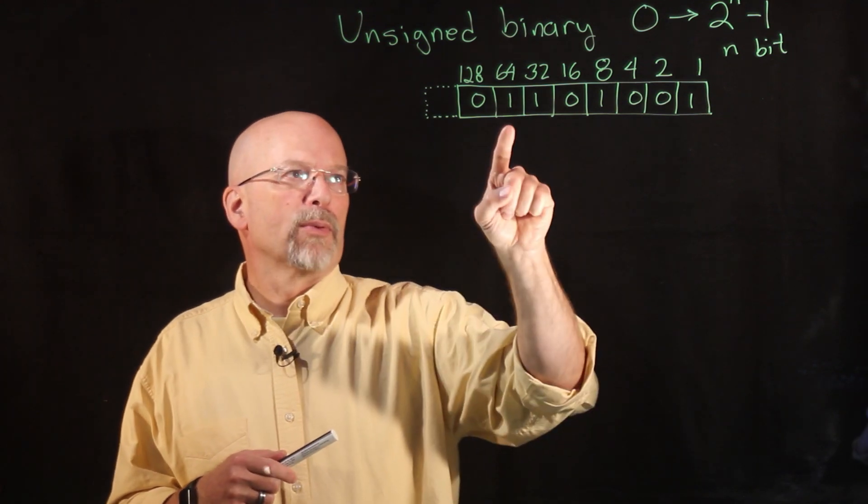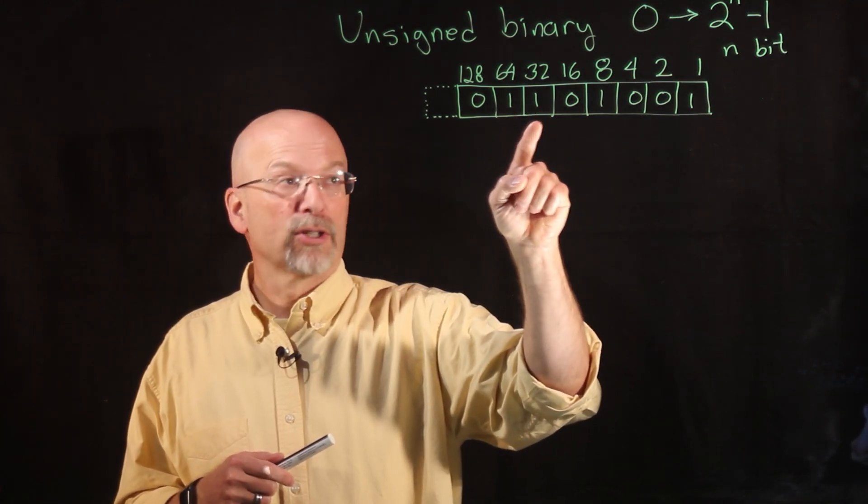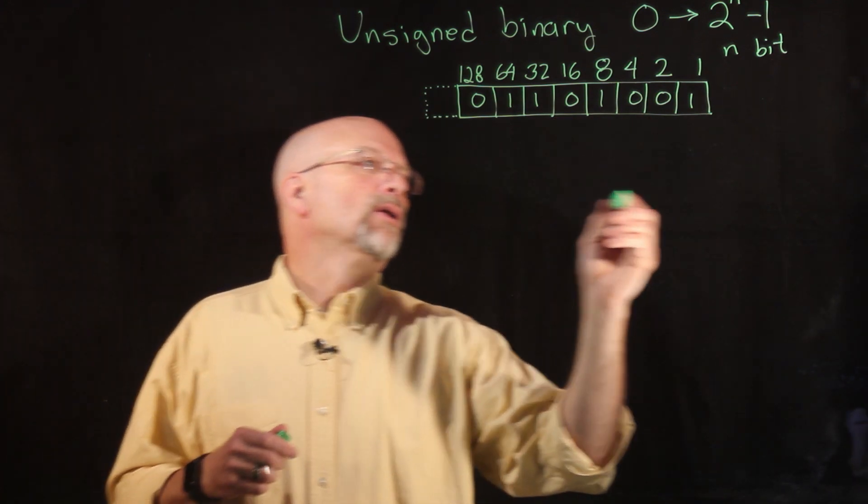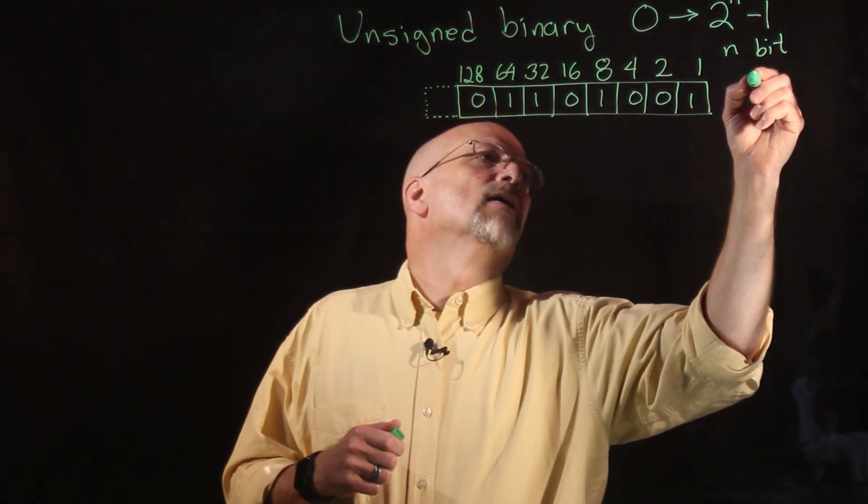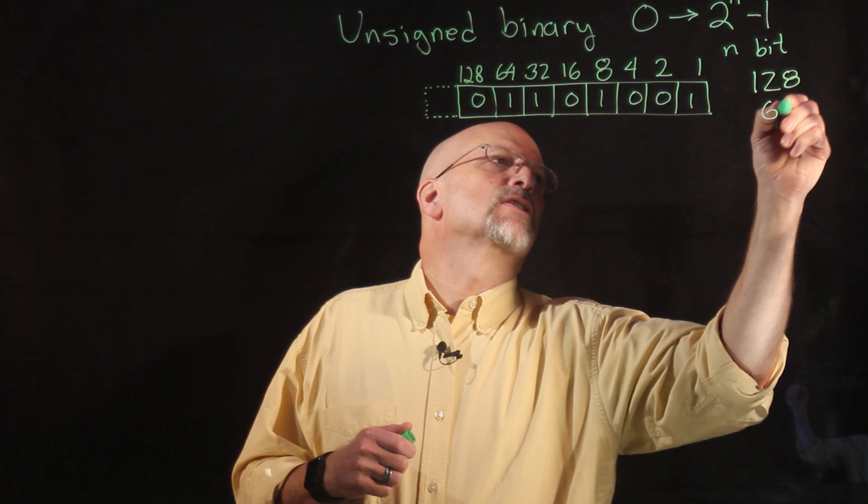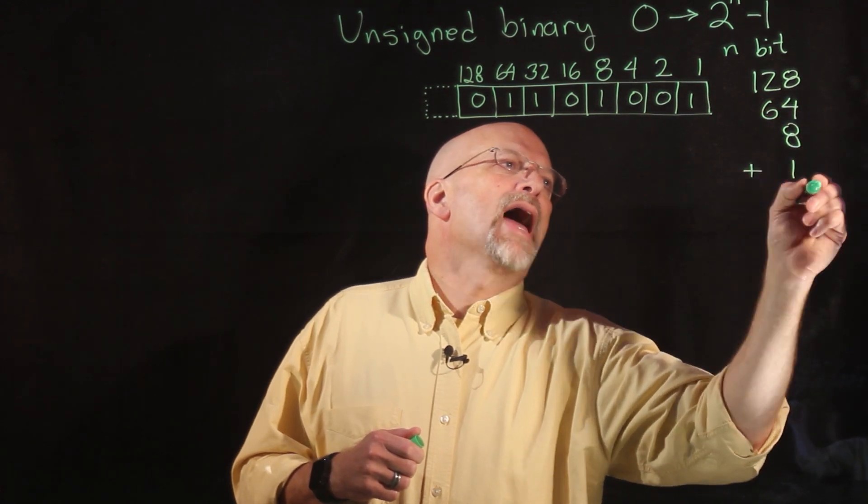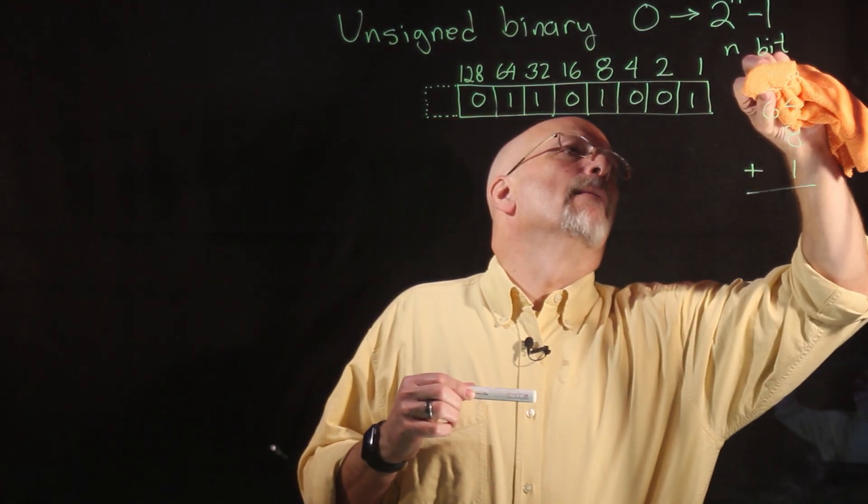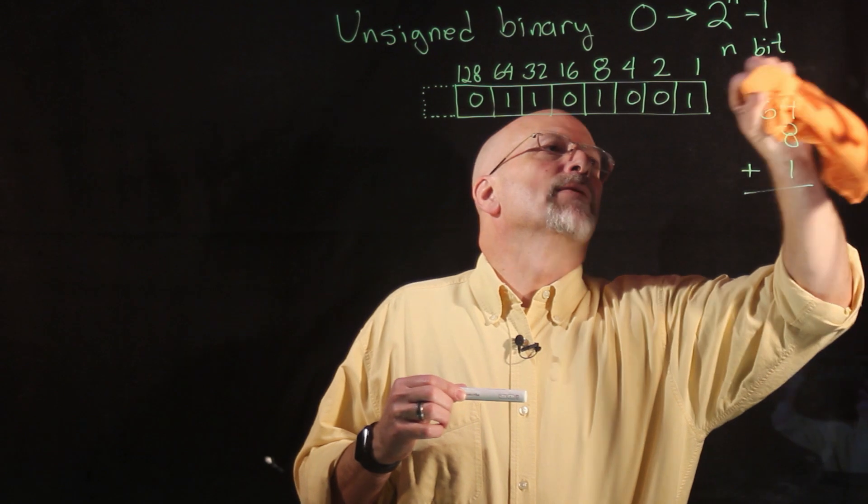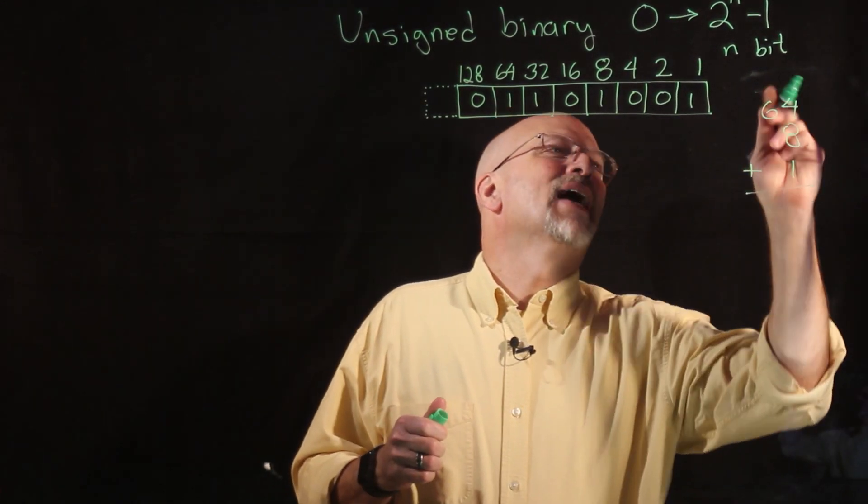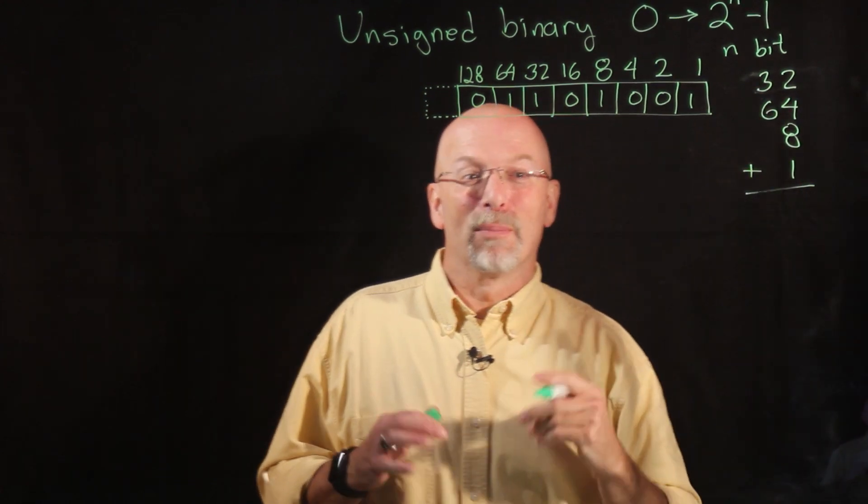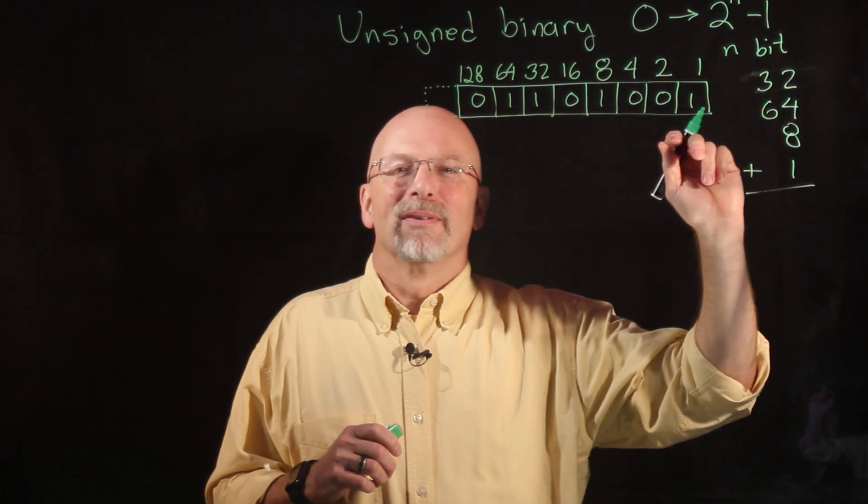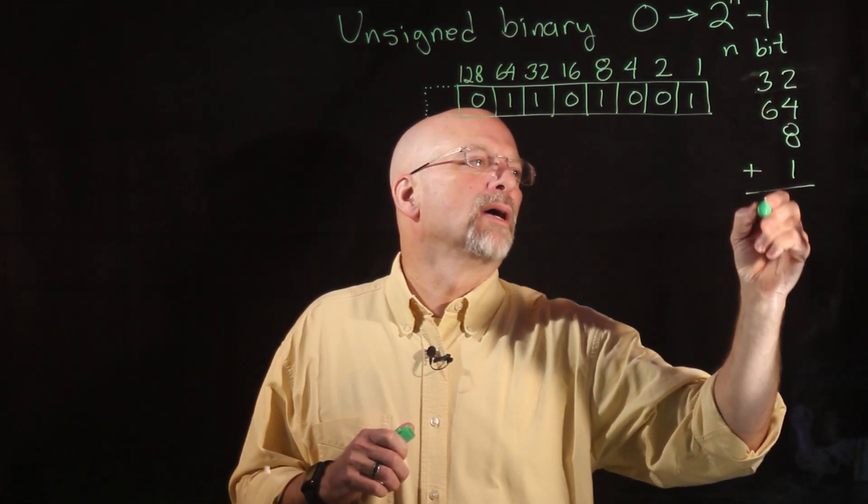Well in this case what we've got is 64 watt is on, 32 watt is on, 8 watt is on, 1 watt is on. So we've got a total that we can represent with this of 128 plus 64 plus 8 plus 1. Add all those, oops, sorry, not 128, getting ahead of myself. We have 32 plus 64 plus 8 plus 1. 32 plus 64 is 96, plus 8 is 104, plus 1 is 105.